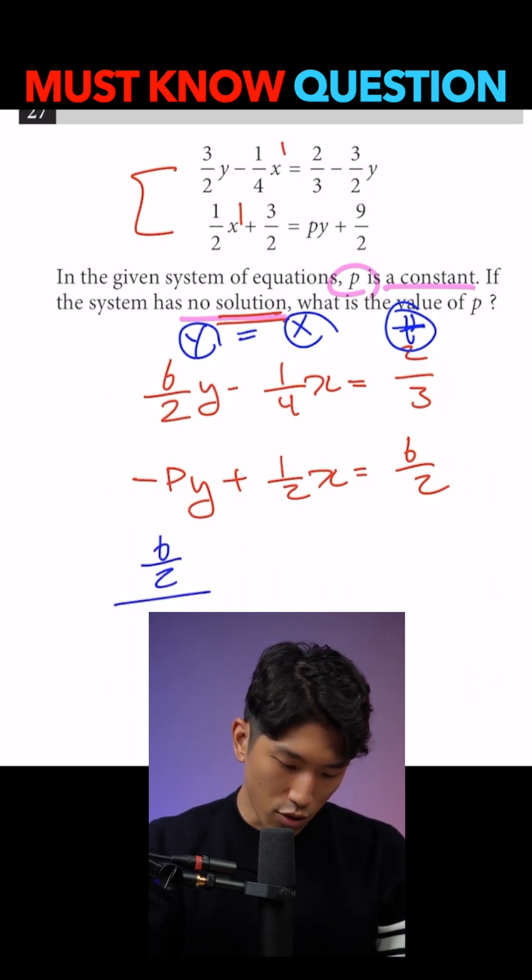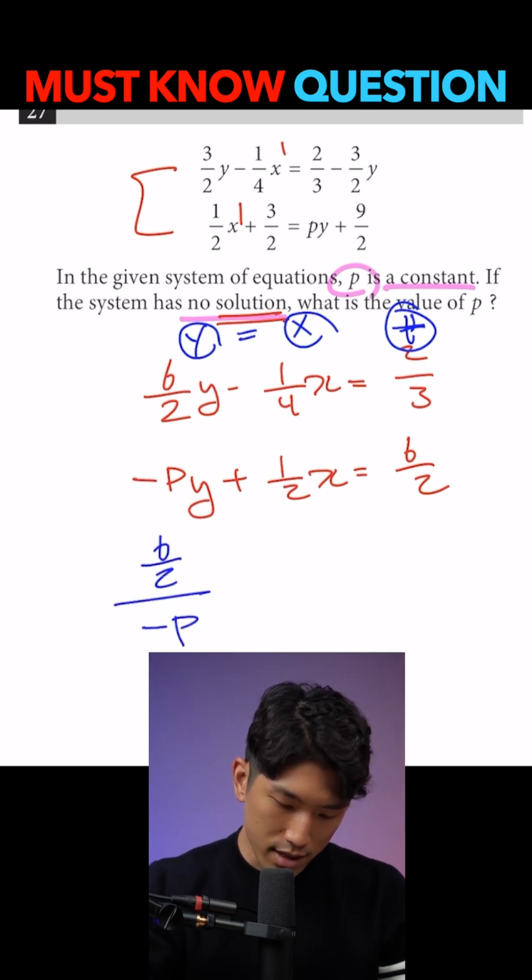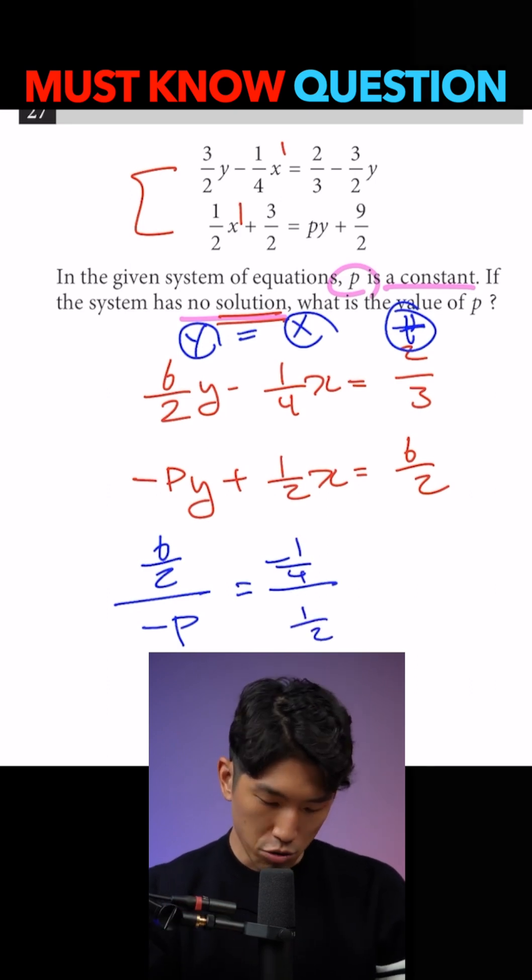So for Y, it's going to be 6 over 2 over minus P. And then for X, it's going to be negative 1 fourth over 1 over 2. And we know that they have to be the same in order for there to be no solution.